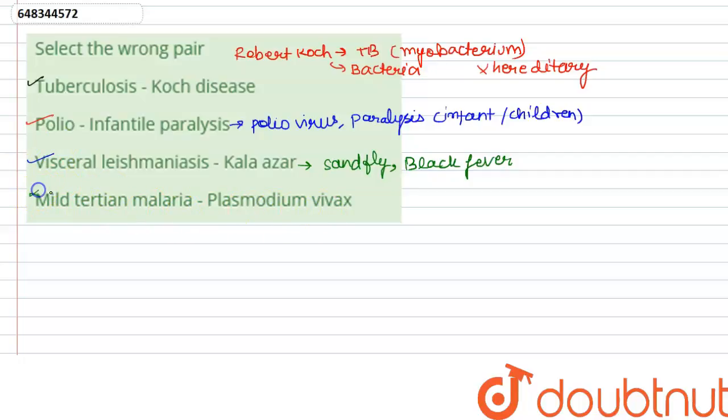Mild tertian malaria is malaria in which fever reoccurs every third day. That type of malaria is known as mild tertian malaria and it is caused by the species Plasmodium ovale.